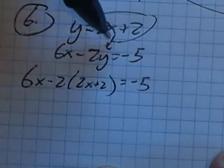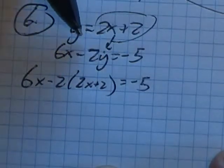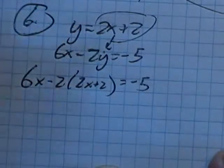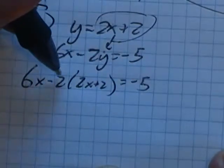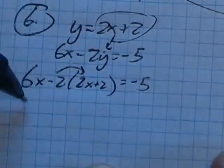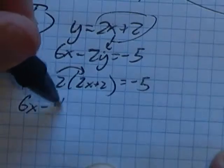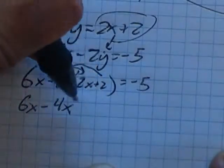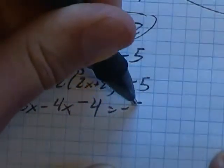Again, I just substituted what y is equal to in for y. They're equal, they're equivalent, I can do that. So now I just have this to solve. I'm gonna distribute that negative 2. This becomes minus 4x. Negative 2 times 2 is minus 4, equals negative 5.